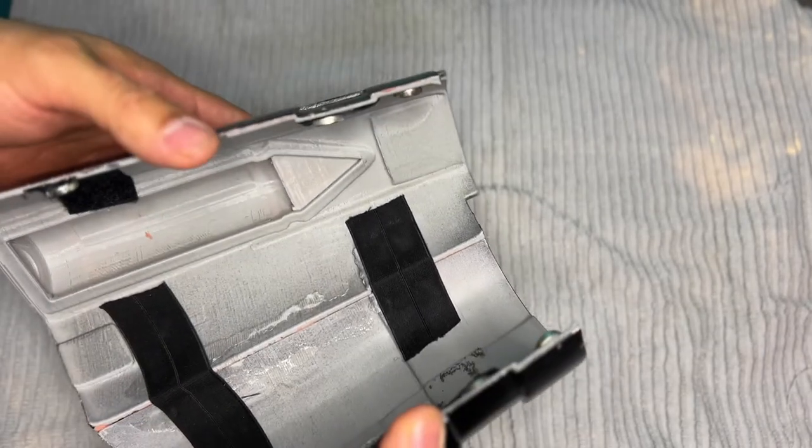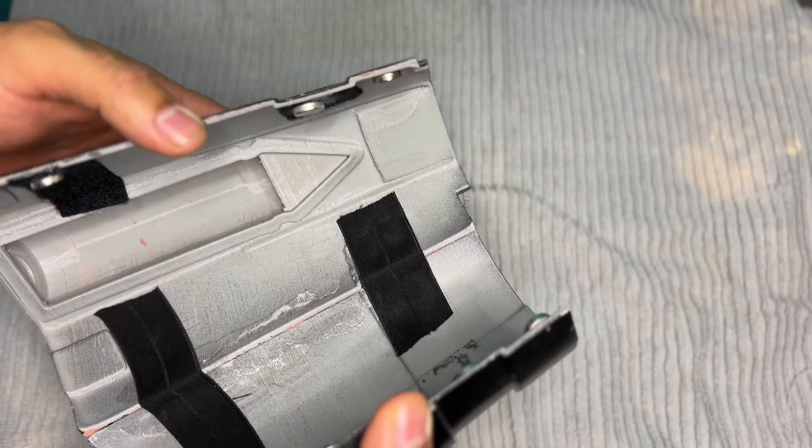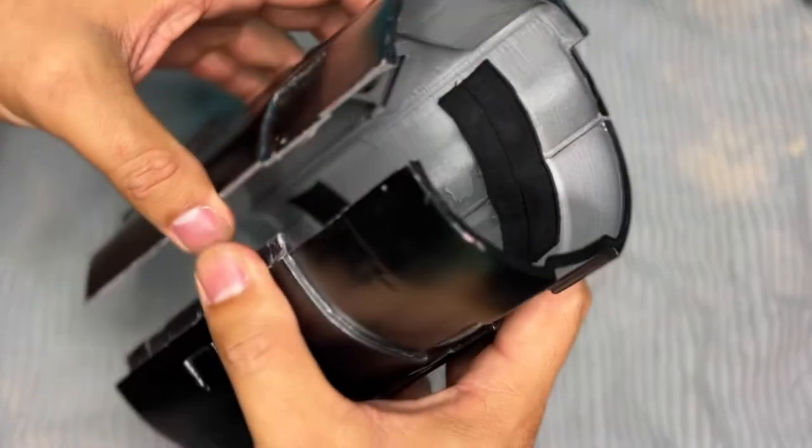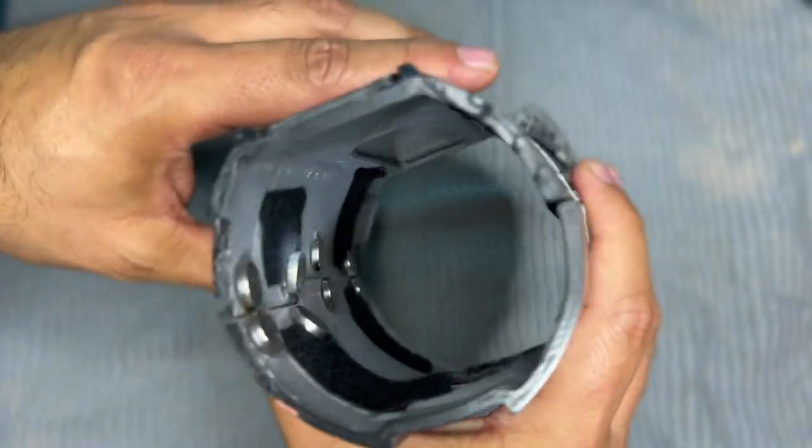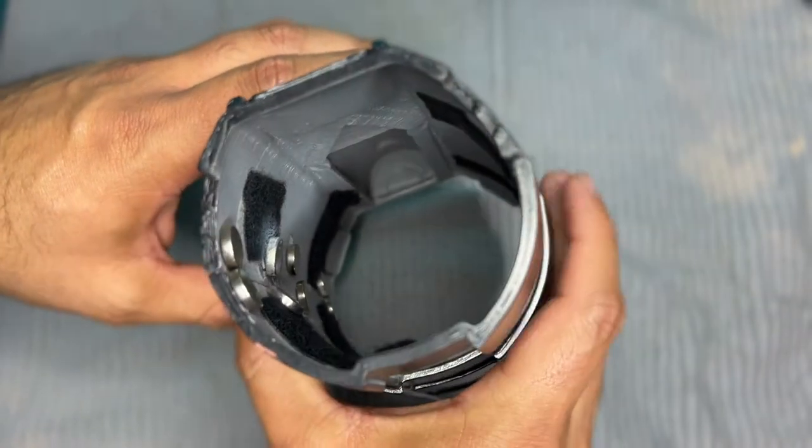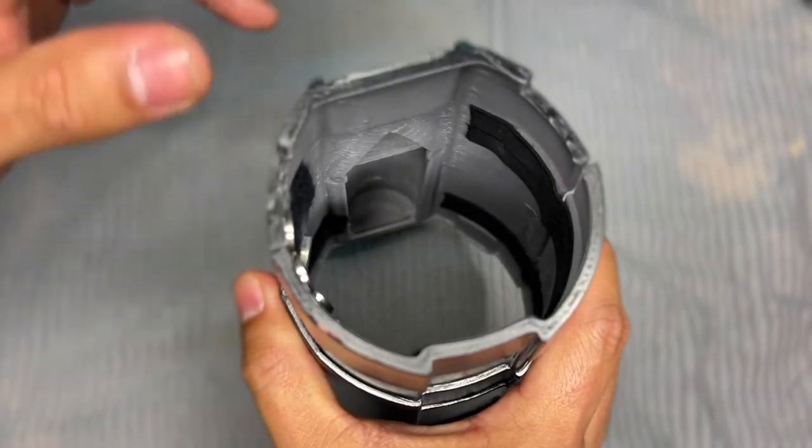I would suggest going with the thicker 5mm and possibly the rectangular square versions because the point of contact I think is very important when you want these to close. Especially if you want to keep the bracers more streamlined without upsizing.